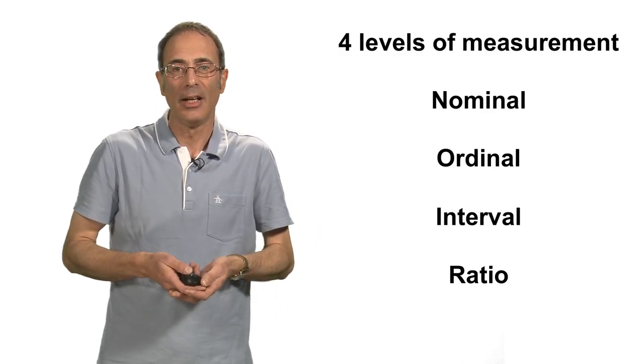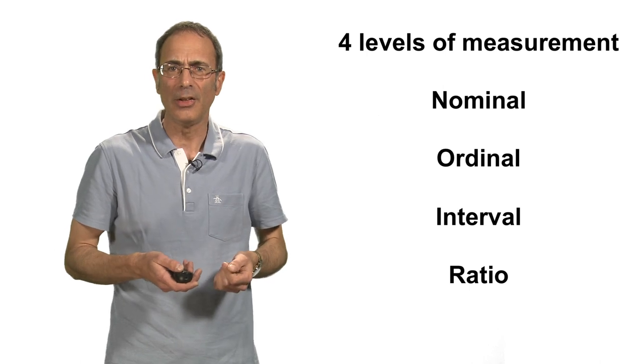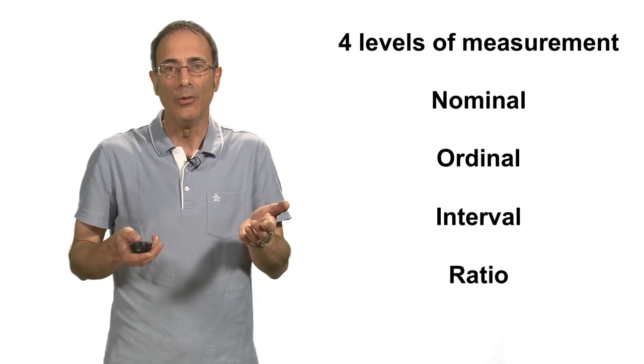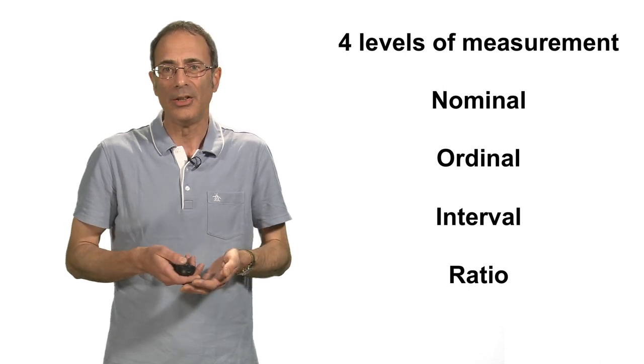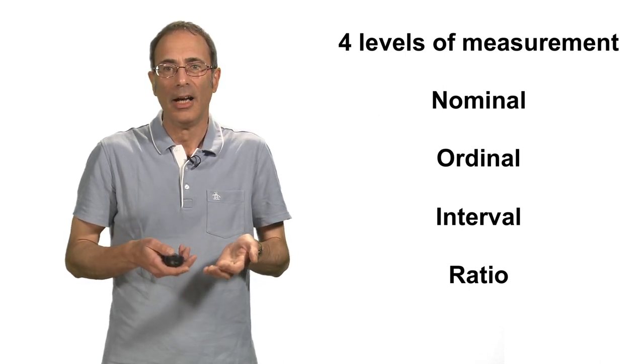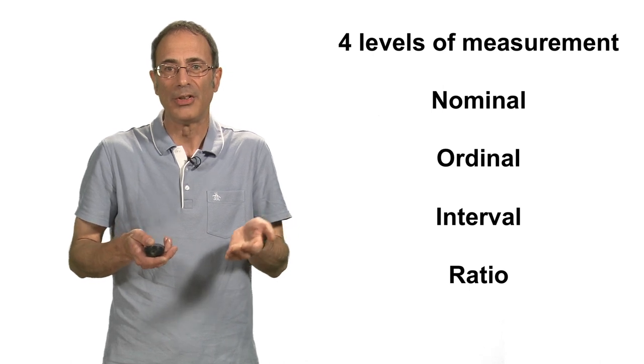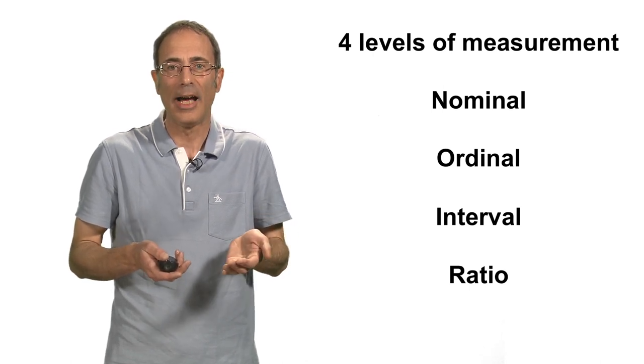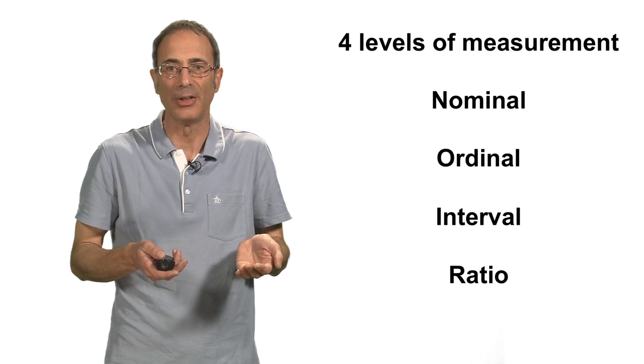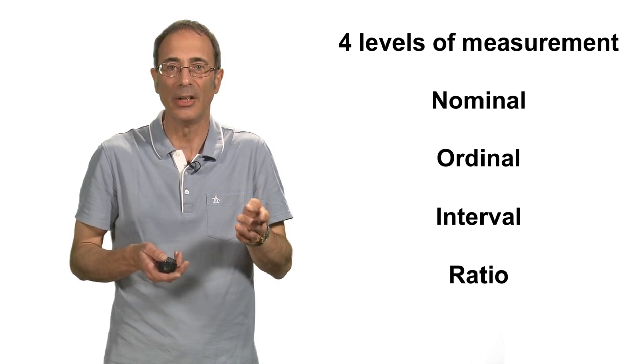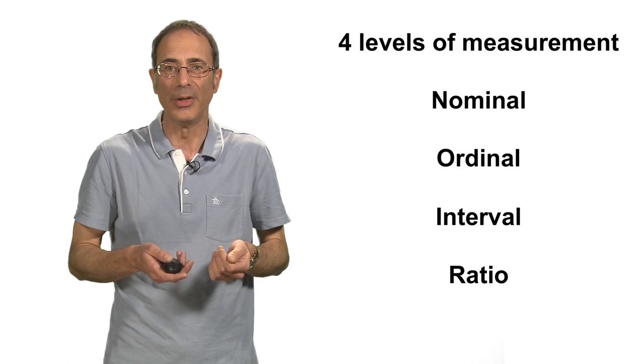Ratio data is slightly different. It's very subtle. It could be called the data that has it all. You've probably heard the word ratio in everyday use. And ratio level refers to measurement where there is a consistent, equal, and measurable distance between each point on the measuring scale, just like interval data. However, there is a true zero point. So for example, temperature in Kelvin—the zero point is absolute zero, which is an objective physical state of zero heat energy. Nothing could be colder than this.